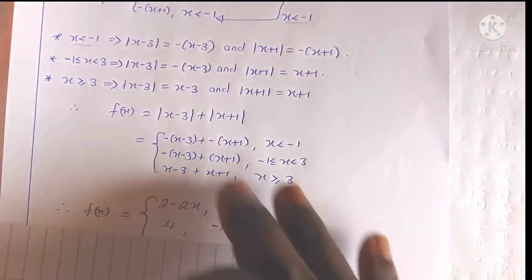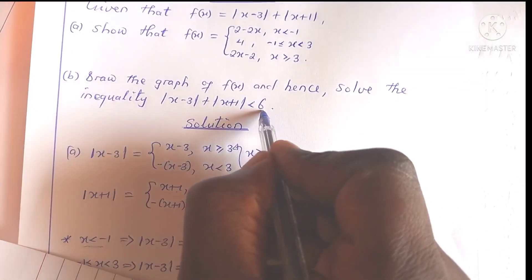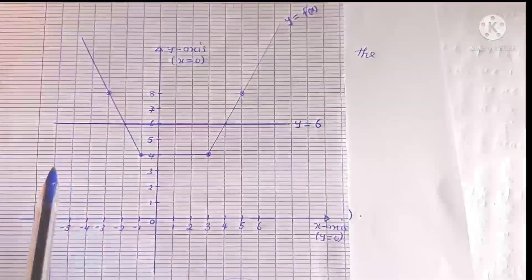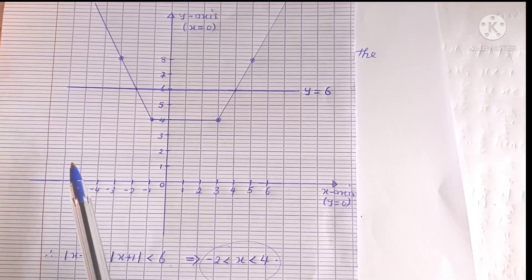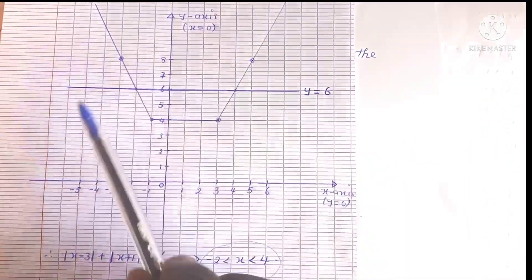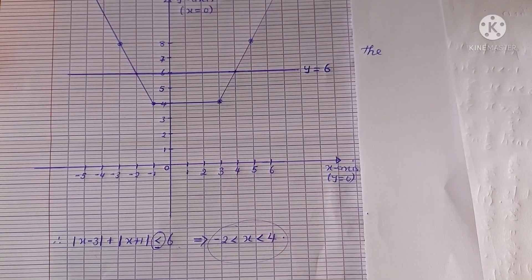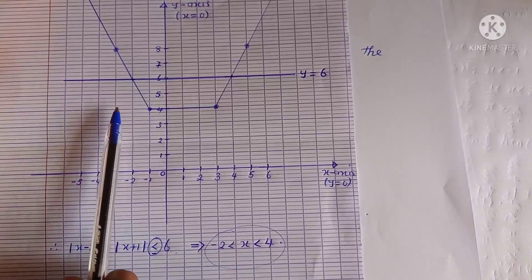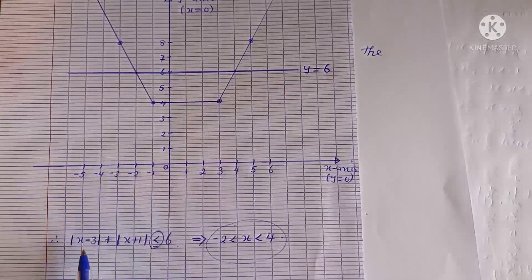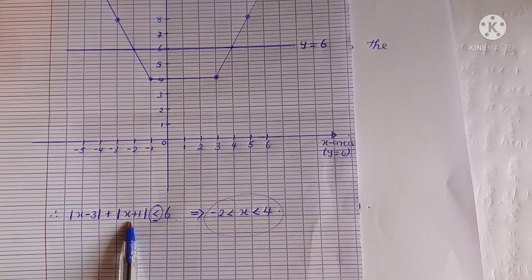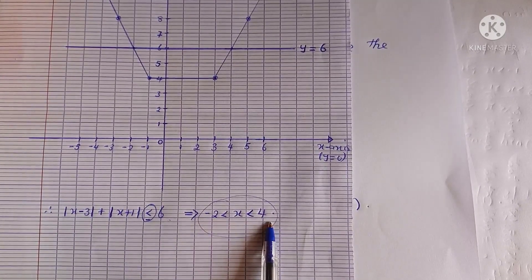To solve the inequality using the graph, we draw the horizontal line y equal to 6 on the same axes. We then read off the values of x for which the graph of y equal to f of x lies below the line y equal to 6. From the graph, we can see that from x equal to negative 2 up to x equal to 4, the graph lies below the line y equal to 6. Therefore, the solution to the inequality — the absolute value of x minus 3 plus the absolute value of x plus 1 less than 6 — is negative 2 less than x less than 4.